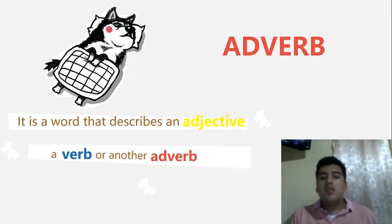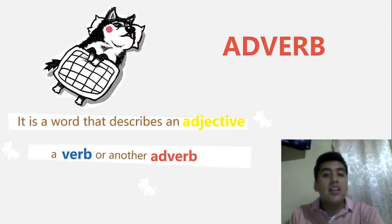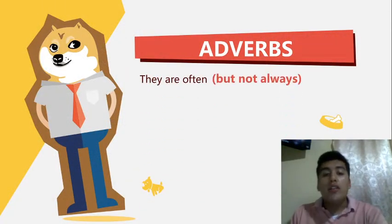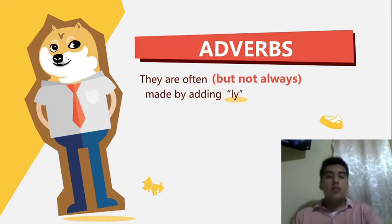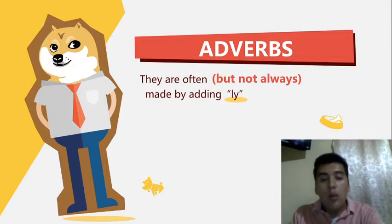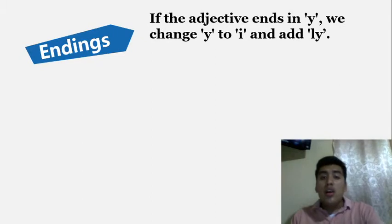An adverb is a word that describes an adjective, a verb, or another adverb. They are often — but not always — made by adding -ly. Adverbs that come from adjectives are often formed this way, just by adding -ly.